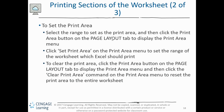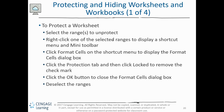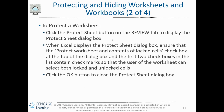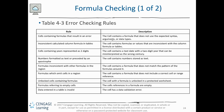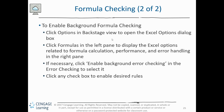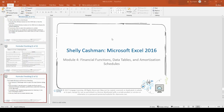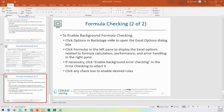This covers the formatting part: how to protect cells, hide and unhide worksheets. You can hide a worksheet as needed. There is also error checking using arrow checking. And that is the end of Module 4. Thank you.